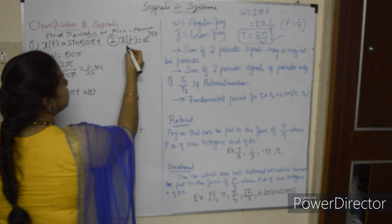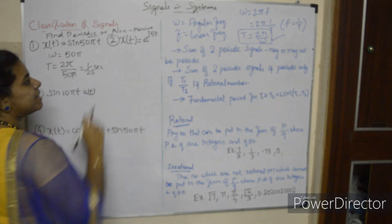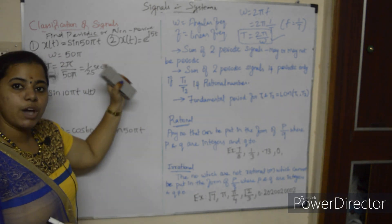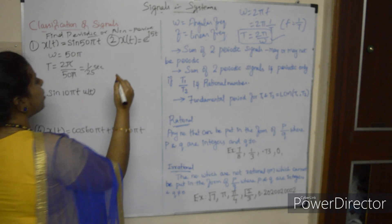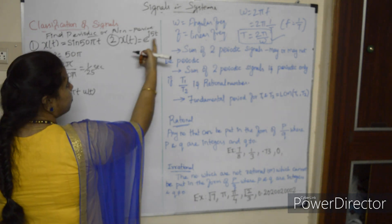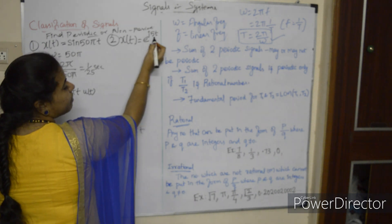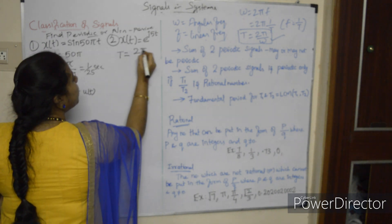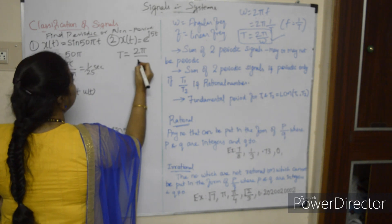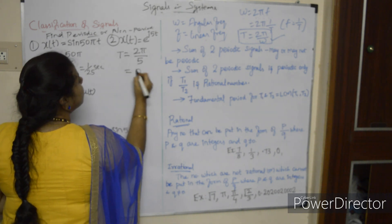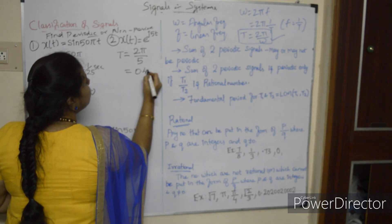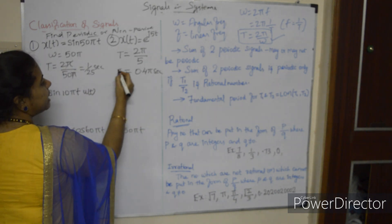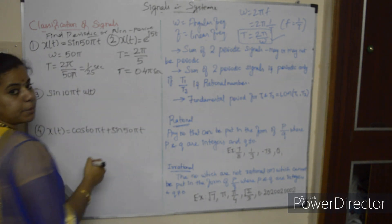Problem 2: Signal in the form e^(jωt), with ω = 5. So T = 2π/5 = 0.4π seconds. This is the fundamental time period.